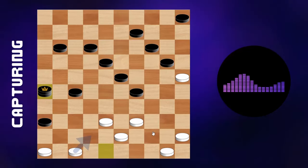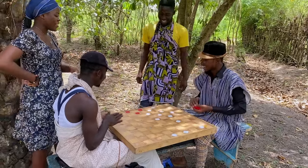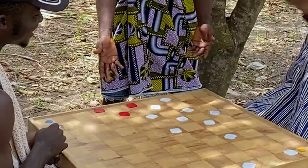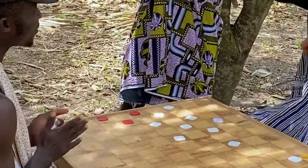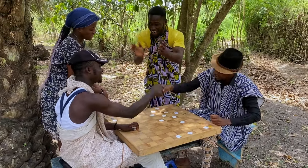A player wins the game when the opponent no longer has any valid moves. This can be either because all of the player's pieces have been captured or because they are all blocked and thus have no more squares available to move. You lose if left with a single piece.